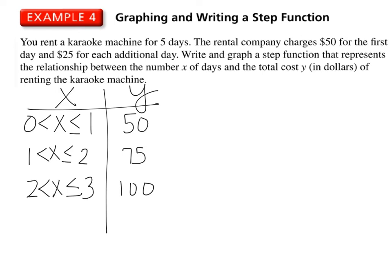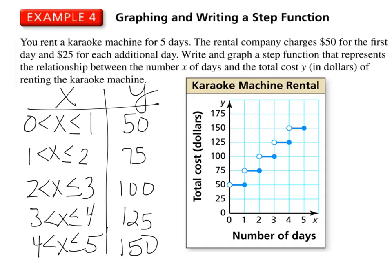And we want 5 days. So, then day 3 to day 4. Day 4 to day 5. And now we're going to graph this. Labels, titles, we have all of it. And here we go. 0, 1, 2, 3, 4, 5.